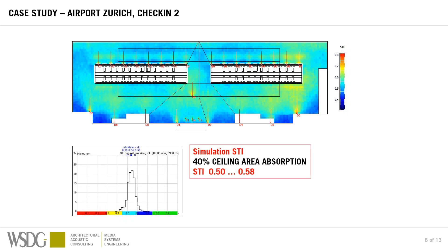If we introduce 40% baffles at the ceiling — meaning 40% of the ceiling is covered with baffles at one meter spacing — there is still a lot of open space at the ceiling, but quite a few baffles nonetheless. You see some yellow spots on the graph where speech intelligibility is pretty high, around 0.6 to 0.65. The distribution graph on the bottom left shows a mean STI of 0.54 in this situation.